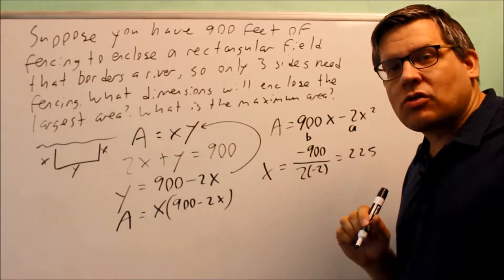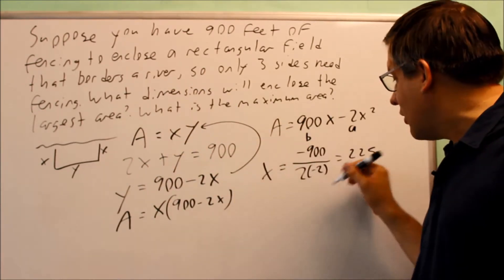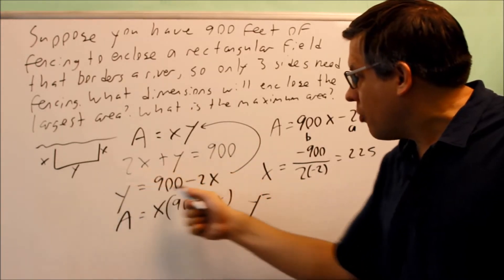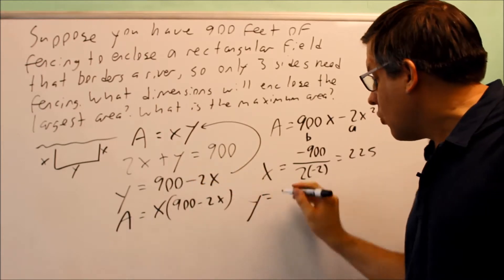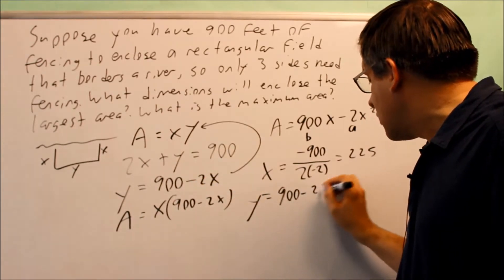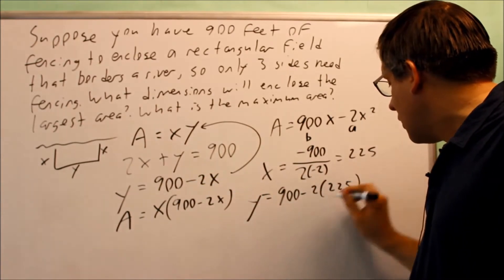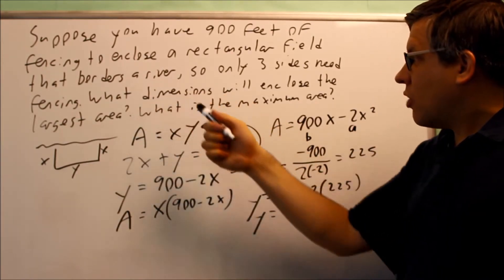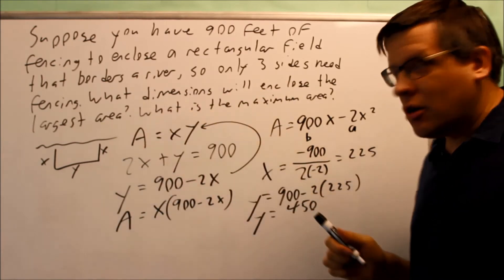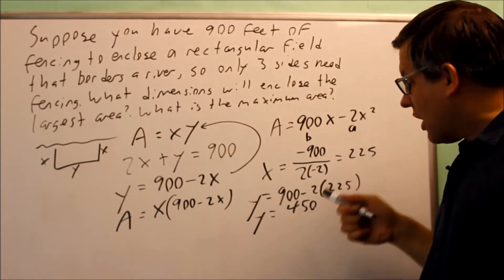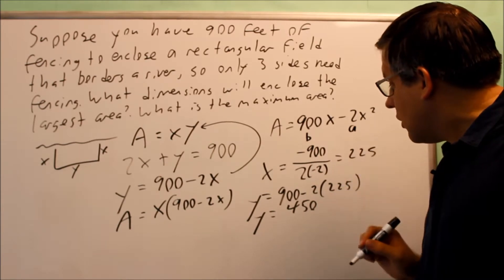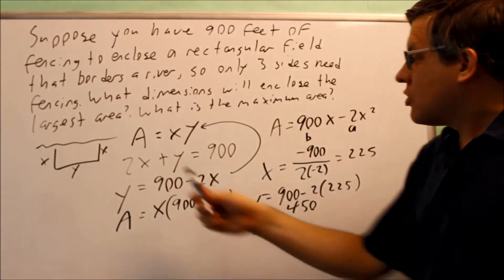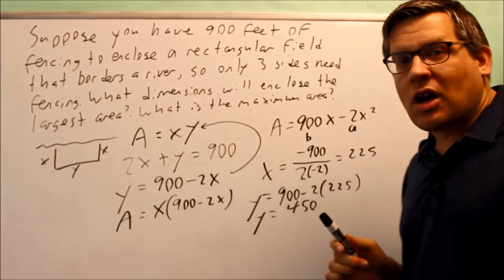That's one of our values. It's asking for dimensions, so they're looking for the x and the y. I found the x here; I can also find the y. We have this formula that allows us to find y: 900 minus 2 times 225, and that's going to give us 450. That answers which dimensions will enclose the largest area—if x is 225 and y is 450, then that's the dimensions that will allow the most space on the inside.